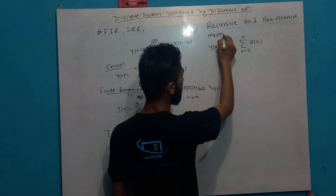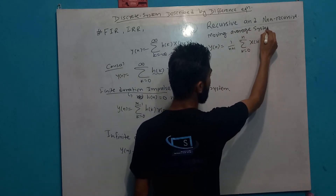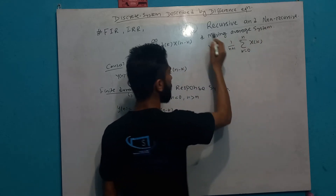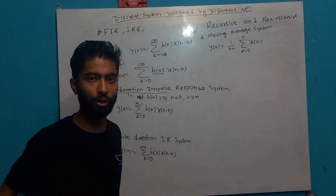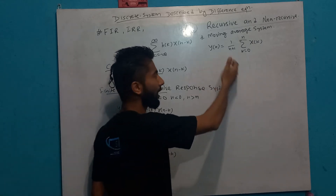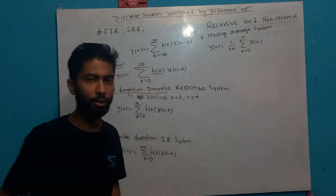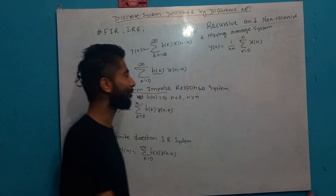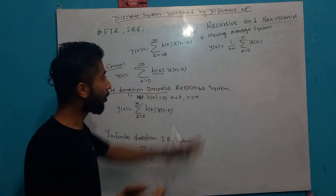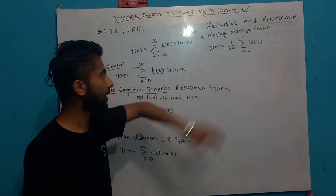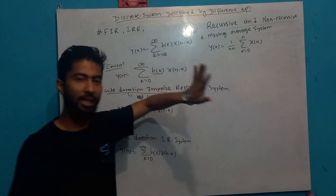Moving Average System: if you know the value of that, you can calculate the average. The formula is dynamic. This is a Moving Average System — it is a non-recursive system because the output y[n] depends only on x[k] inputs, not on past outputs.